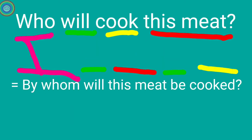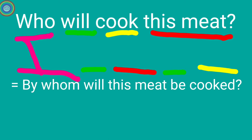Another example: 'Who will cook this meat?' For a 'who' question, we add 'by whom' at the beginning, then the auxiliary, then the object as the subject — 'this meat'. If there is 'will' plus V1, it changes to 'will be' plus V3. 'Cook' changes to 'cooked'. Result: 'Will this meat be cooked by whom?'